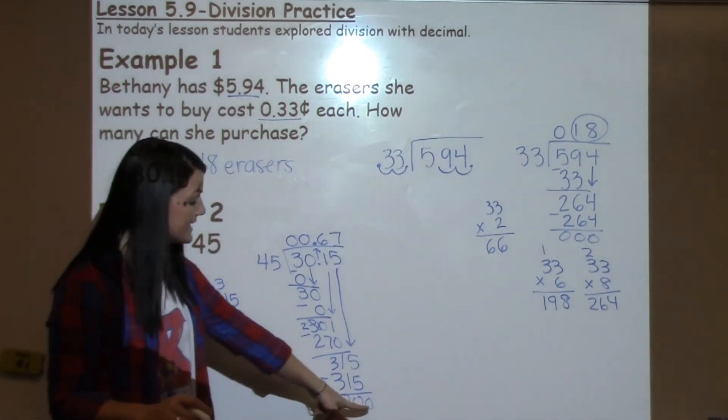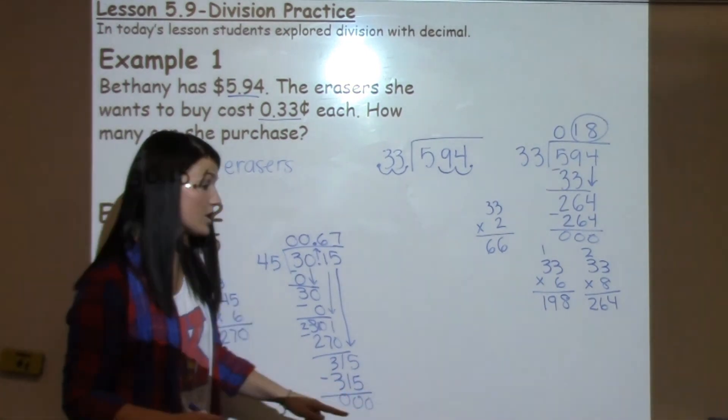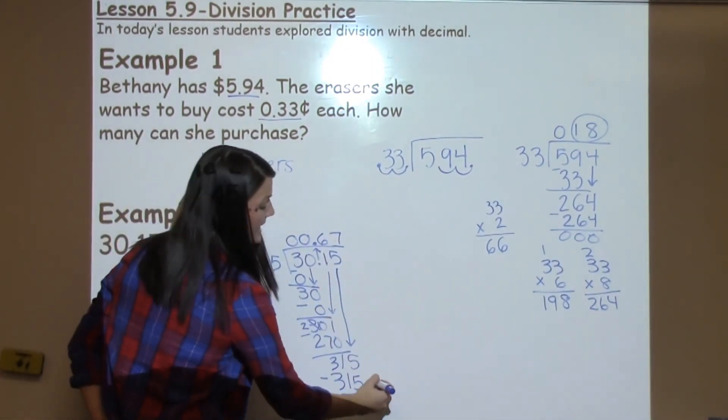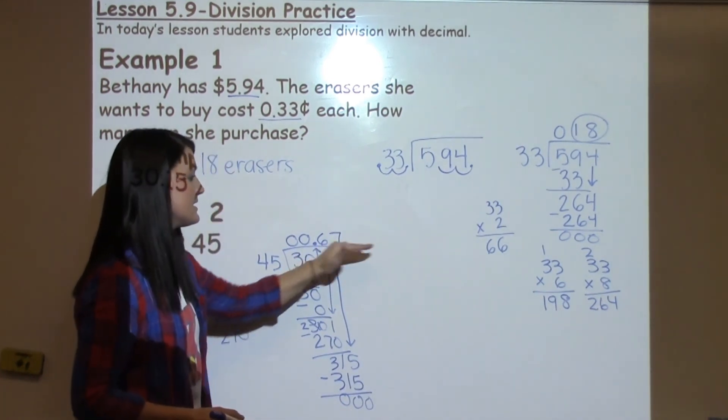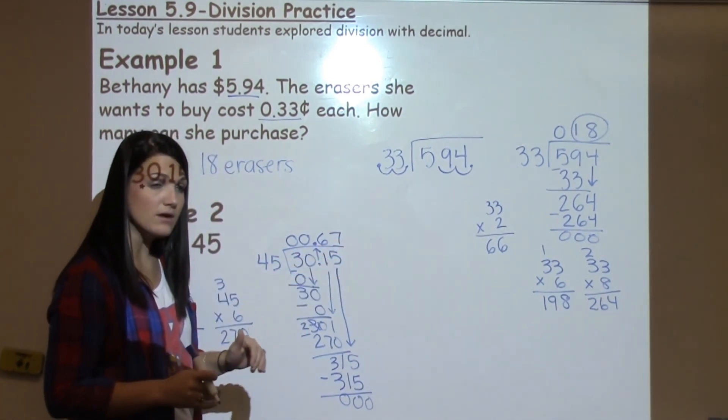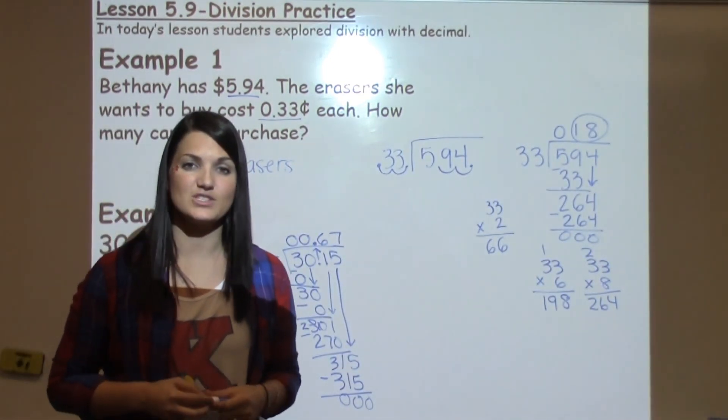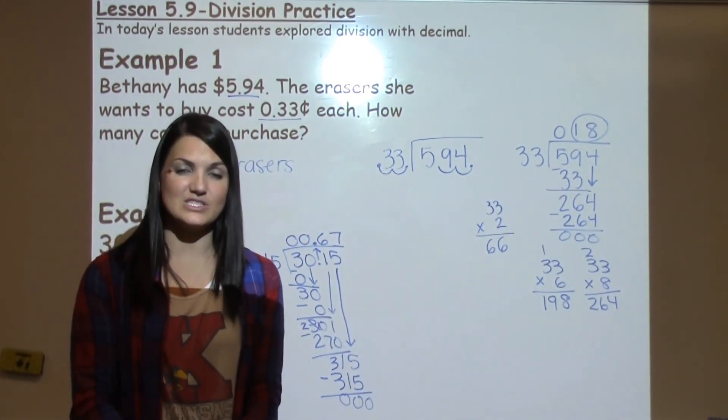Now if your student did have a remainder here, when they're working with decimal numbers on the inside, they might have to add a 0 and continue going to get that decimal number to equal out. That's a strategy that they're working on in some of the upcoming lessons. If you have any questions about 5.9, make sure to see your math teacher.